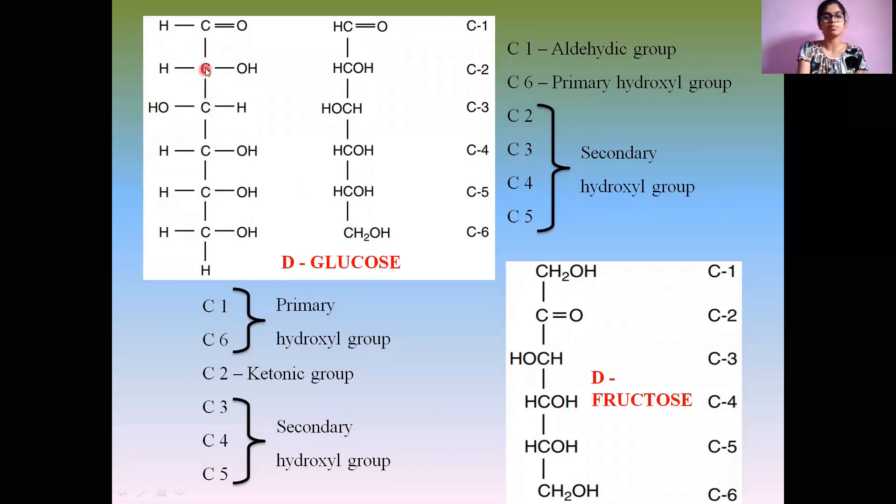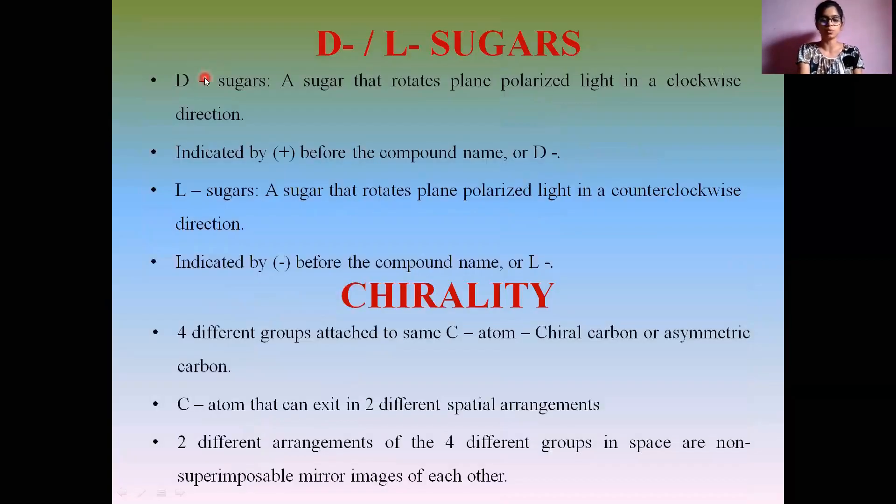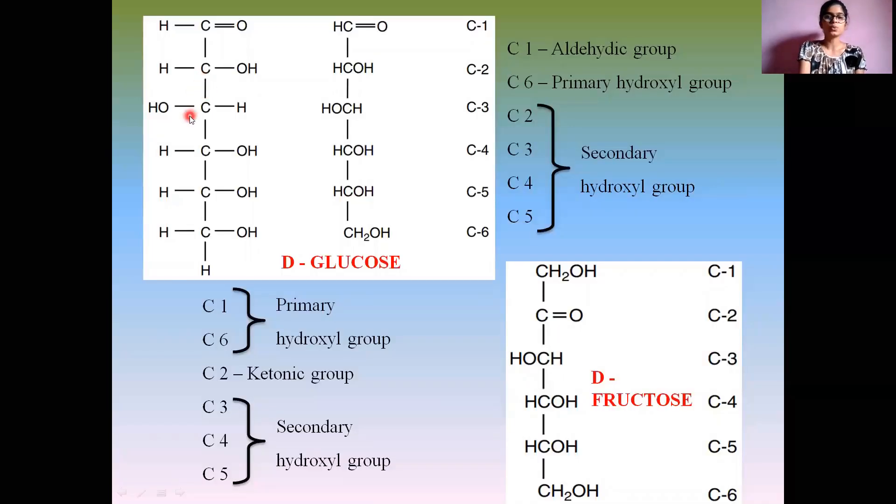A similar pattern is observed in C2, C3, C4, and C5 carbons, whereas at C6, two bonds have the same group attached, which is hydrogen. So this cannot be chiral, whereas the secondary hydroxyl groups have four different groups attached. These are called chiral carbon atoms.